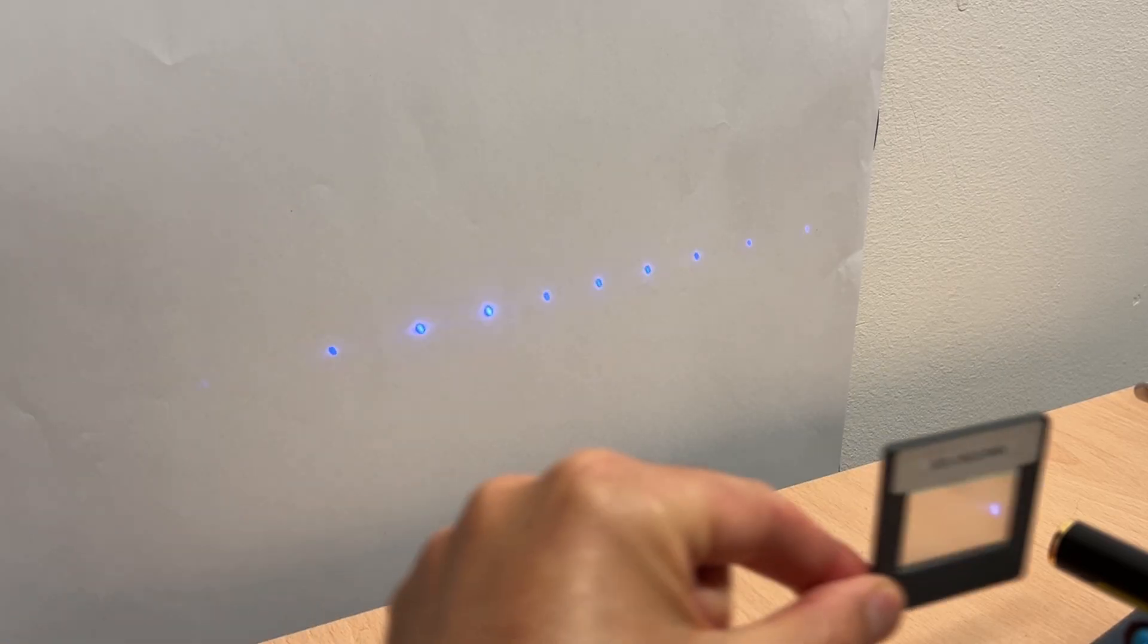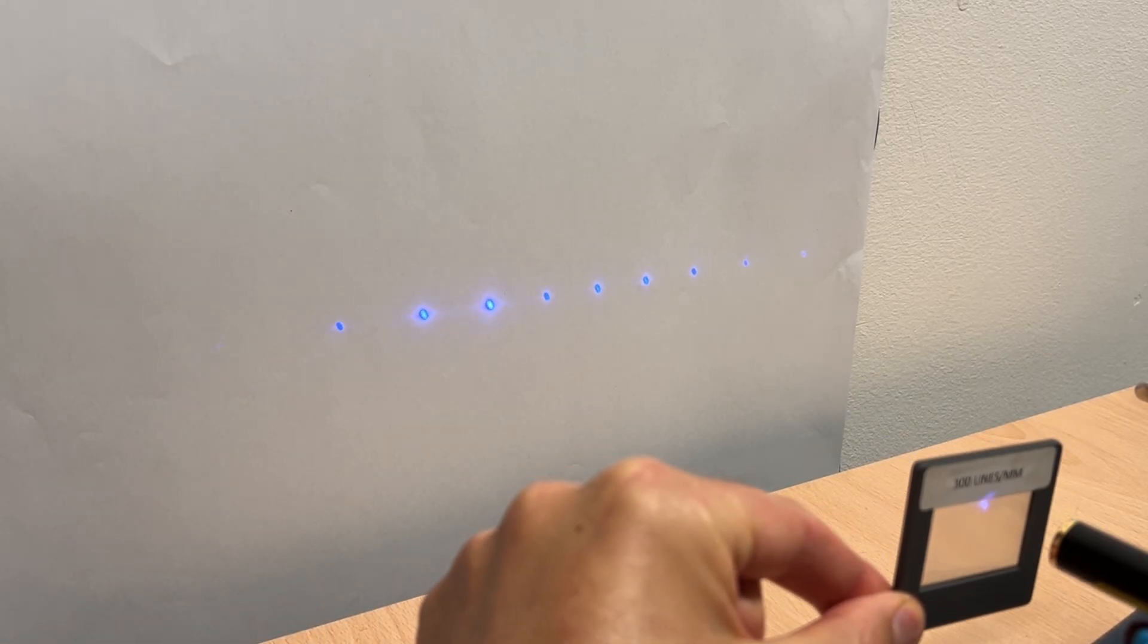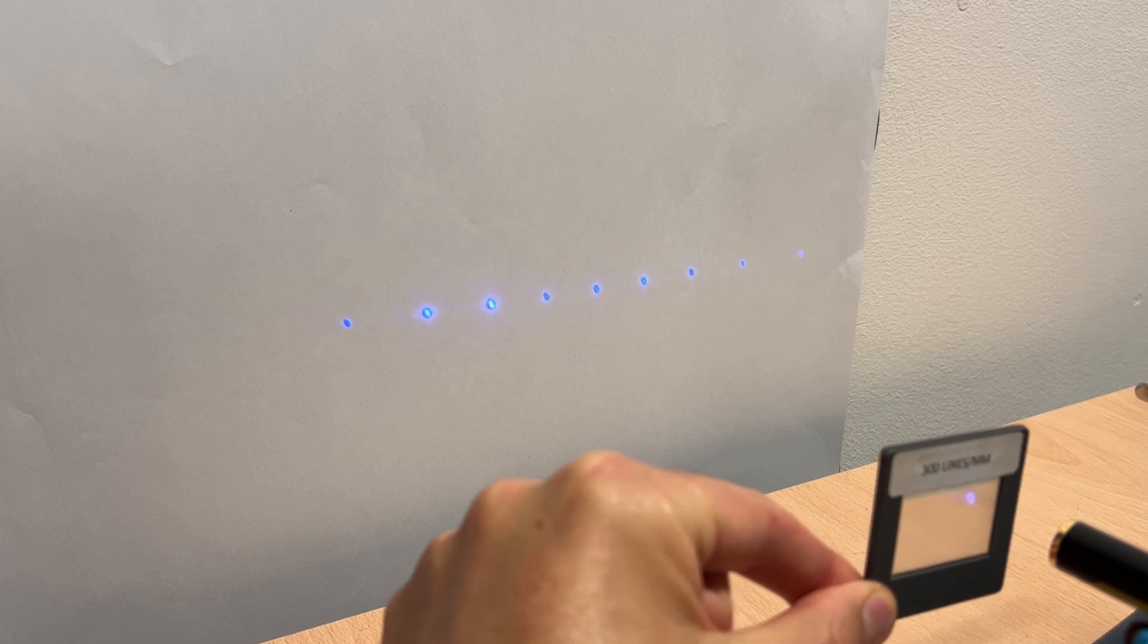Inserting a diffraction grating, which is a large number of slits, produces a wave interference pattern of dots on my piece of paper.